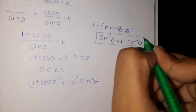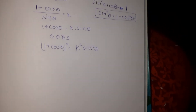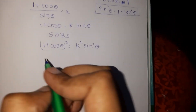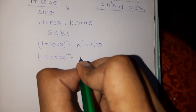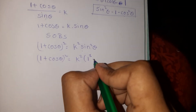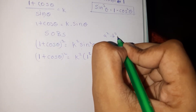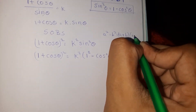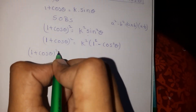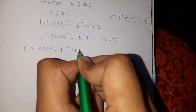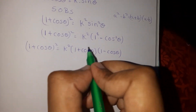From the identity, sin squared theta is equal to 1 minus cos squared theta. We substitute this form here. In place of sin squared theta, we put 1 minus cos squared theta. Using the identity a squared minus b squared equals (a plus b)(a minus b), we split: 1 plus cos theta whole square is equal to k squared into (1 plus cos theta)(1 minus cos theta).